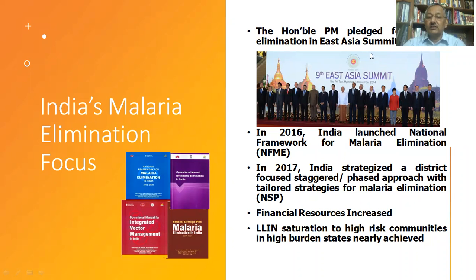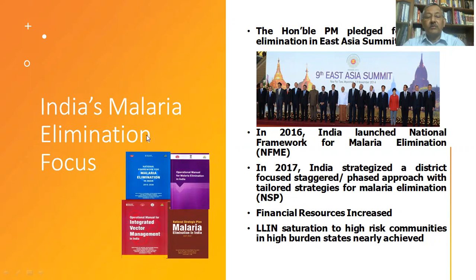The highest level commitment came from the Prime Minister's pledge during the East Asia Summit. Following that, in 2016 the first Framework for Malaria Elimination was released — the main guiding document. Subsequently, the National Strategic Plan and an Operation Manual for Integrated Vector Management were simultaneously released by the Union Health Minister in 2017. Financial resources have been increased almost double, and the primary tool — long-lasting insecticidal nets — has been saturated to priority areas.